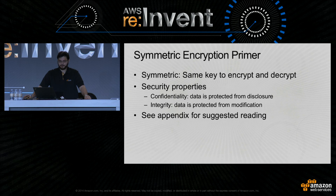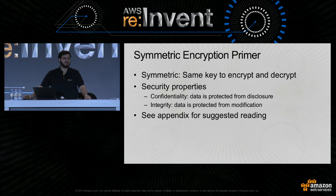Let's start with a brief overview of symmetric encryption. The goal here is not to turn you into a cryptographer, but to provide some background information. Symmetric encryption is where you use the same key to encrypt and to decrypt. It is typically employed to achieve two security properties: confidentiality — data cannot be read by parties other than those you expect — and integrity, which means the data is protected from modification.